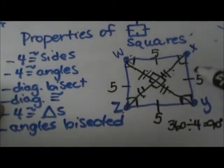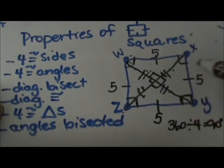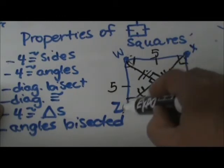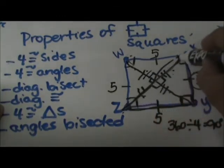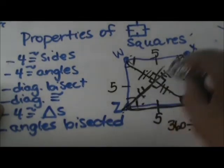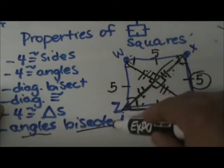So we can actually calculate the length of the diagonals using the side of five. If this side is five, and this side is five, we have a right triangle right here, where these two angles are 45 and 45, because the angles are also bisected.